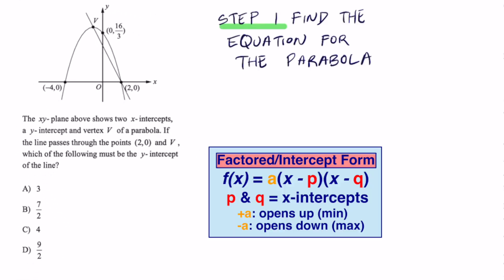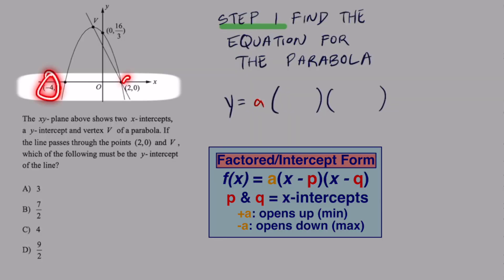It's going to be y equals—we don't have an 'a' value, we need that first. The stuff that goes in the parentheses are just your x-intercepts and all you have to do is write the opposite of these numbers. So instead of negative 4, you're going to put x plus 4, and instead of 2, you're going to put x minus 2.